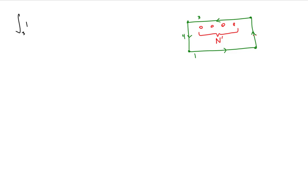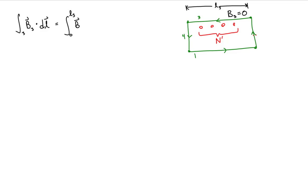Along path three, the path is entirely outside the solenoid, where we approximate the magnetic field to be zero. Integrating the dot product of the magnetic field and the line differential from zero to L3, with the magnetic field equal to zero, this integral evaluates to zero.